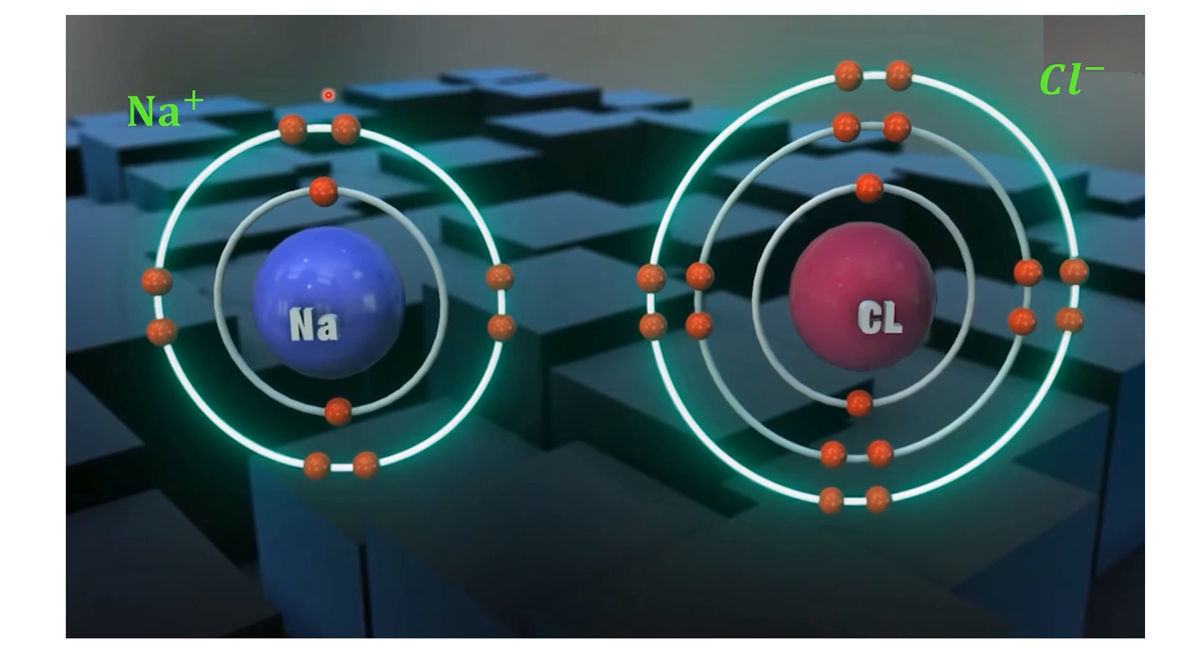At this point, with sodium carrying a positive charge and chlorine a negative one, the two ions attract each other with a strong electrostatic force. This powerful attraction pulls them together, forming an ionic bond.